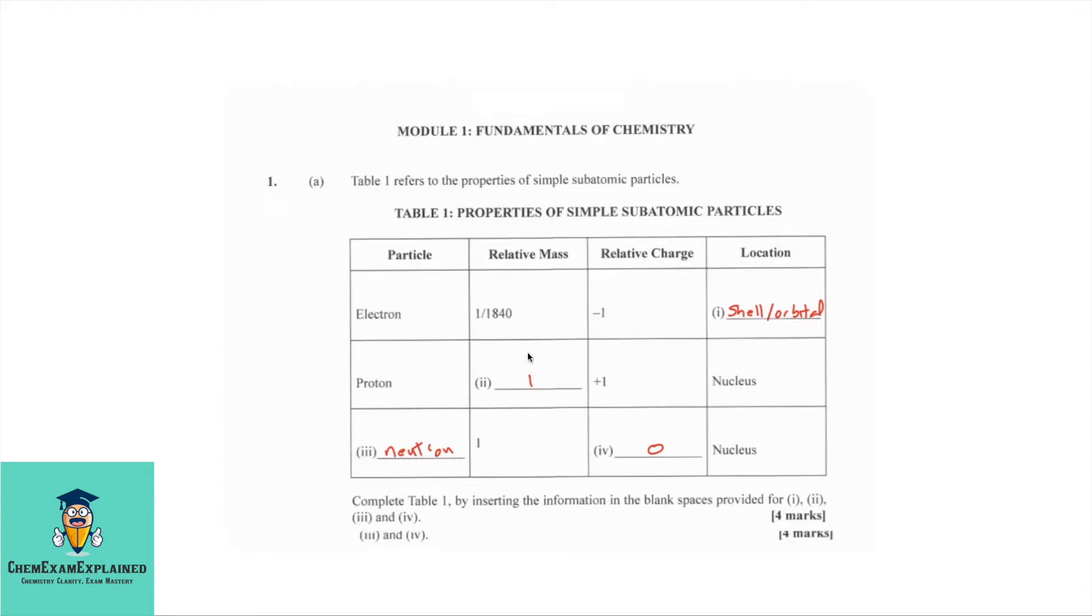For the second column, you have 1 over 1840 for the relative mass of the electron, 1 for the relative mass of the proton, and 1 for the relative mass of the neutron. The relative charge, you are given negative 1 for the electron, positive 1 for the proton, and you are to fill in 0 for the neutron.